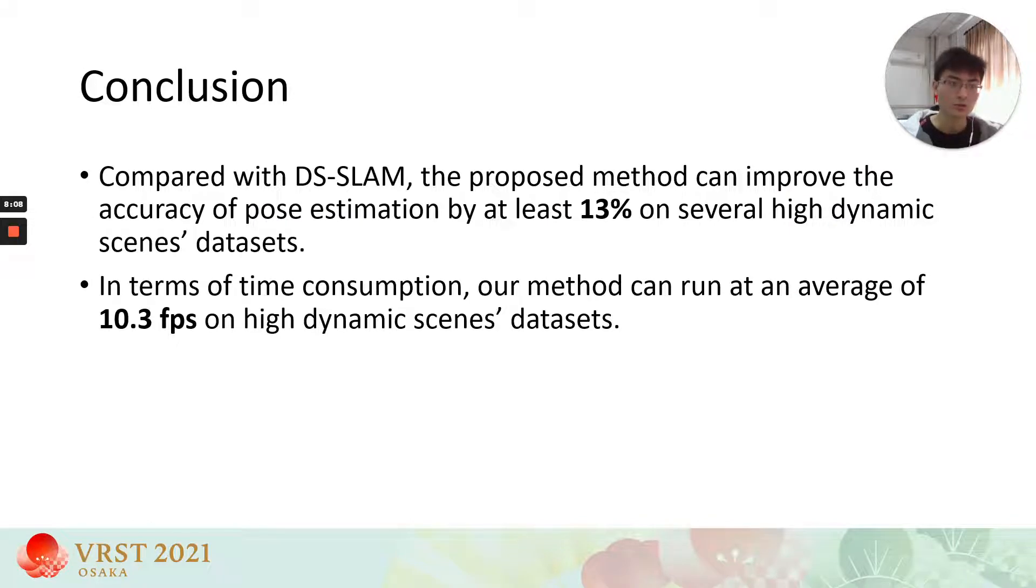So in this work, we provide a new idea taking advantage of semantic segmentation and object detection to eliminate dynamic points. Compared with DS SLAM, the proposed method can improve the accuracy of pose estimation by at least 13% on several high dynamic scenes datasets.